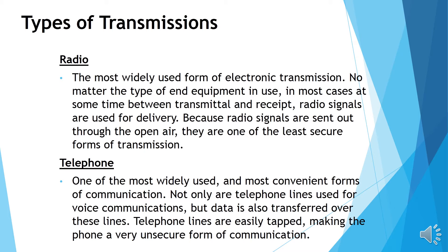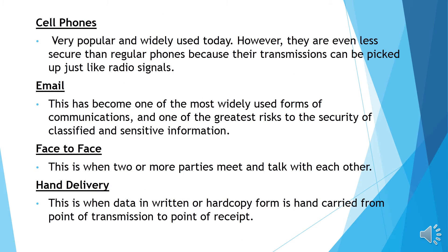Next, the telephone. Telephone is one of the most widely used and most convenient forms of communication. Not only are telephone lines used for voice communications, but data is also transferred over these lines. Telephone lines are easily tapped, making the phone a very unsecured form of communication. Telephones are very popular and widely used today; however, they are even less secure than a regular phone because their transmissions can be picked up just like a radio signal.